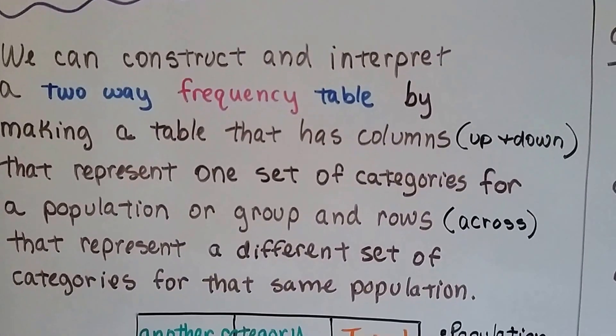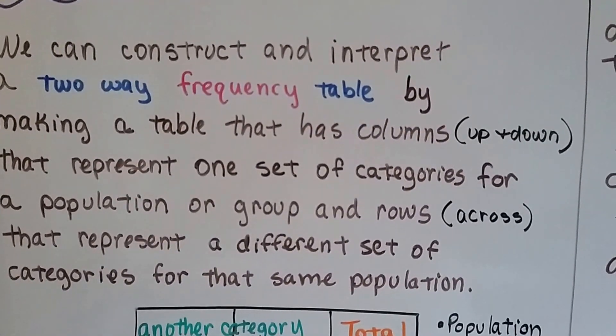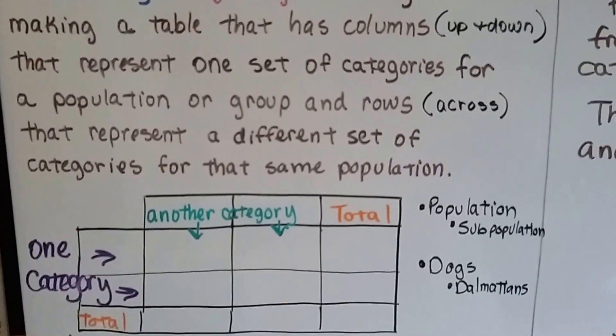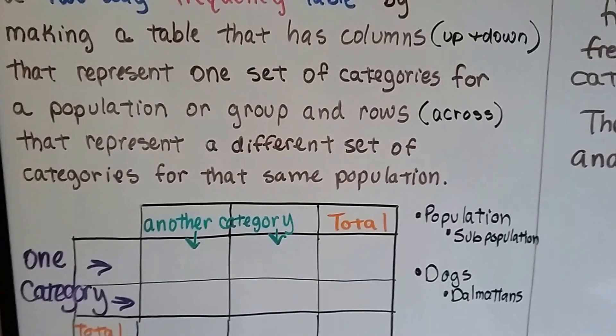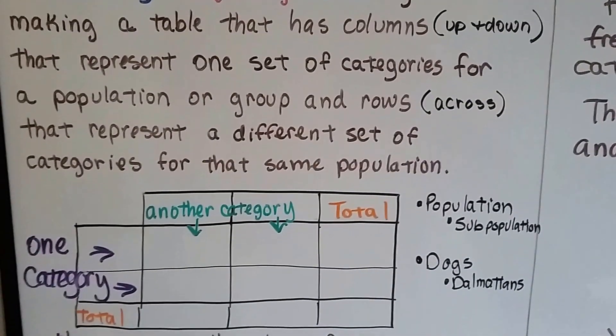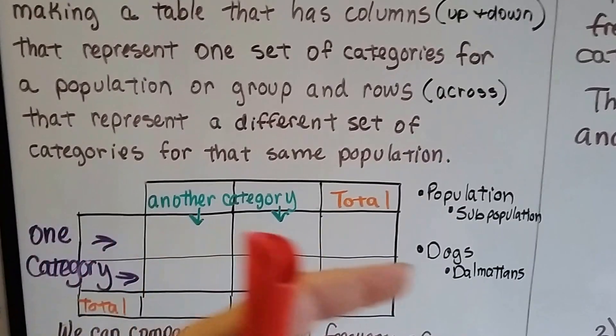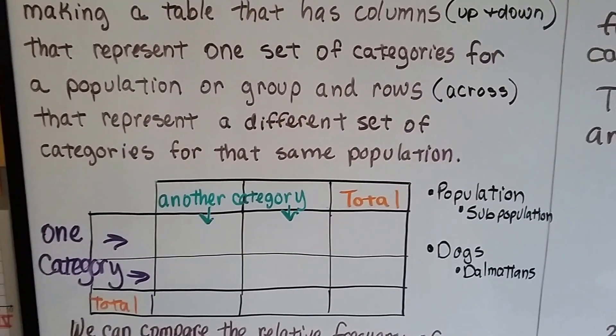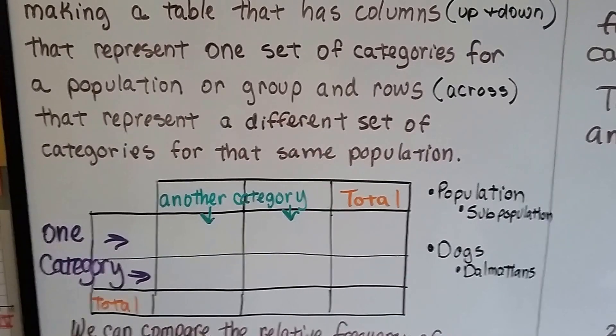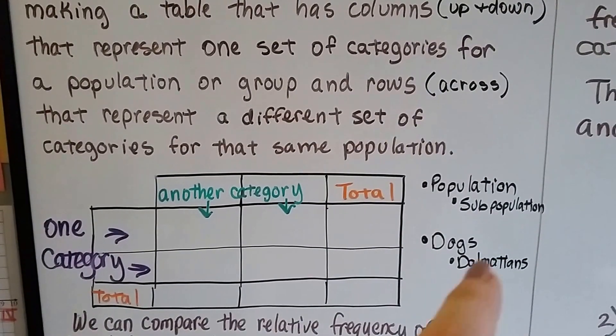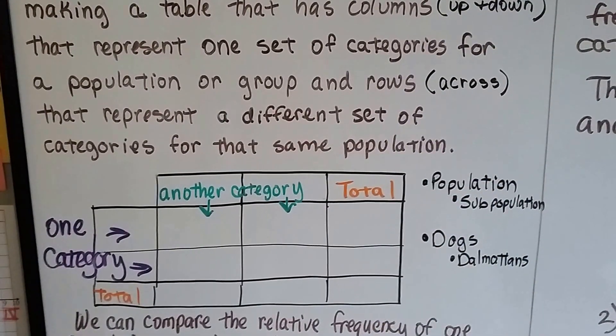We can construct and interpret a two-way frequency table by making a table that has columns up and down that represent one set of categories for a population or group, and rows across that represent a different set of categories for that same population. That means there's a population and a sub-population inside of the bigger one.